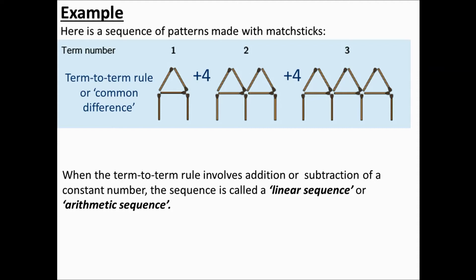A few more keywords. When the term-to-term rule involves addition or subtraction of a constant number, the sequence is called a linear sequence. It's also known as an arithmetic sequence. Of course you could have another type of sequence where you're multiplying each time to get to the next term.